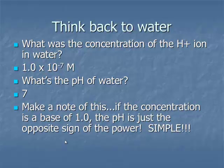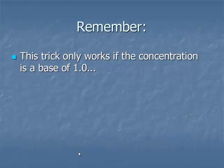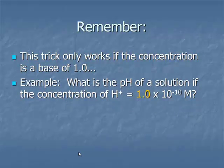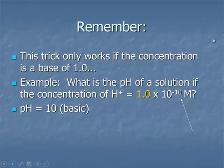If the concentration has a base of 1.0, whatever number is on that power of 10, if you change that negative to a positive, that's the pH of the solution. The trick only works if the concentration is a base of 1.0. For example, what is the pH if [H+] = 1.0 × 10^-10 M? Change the negative power of 10 to positive: the pH is 10. That means the solution is basic.